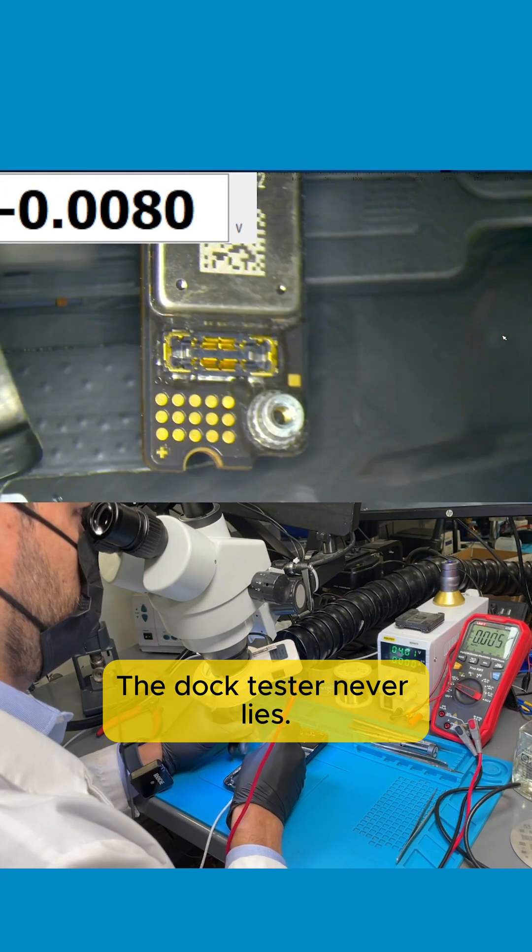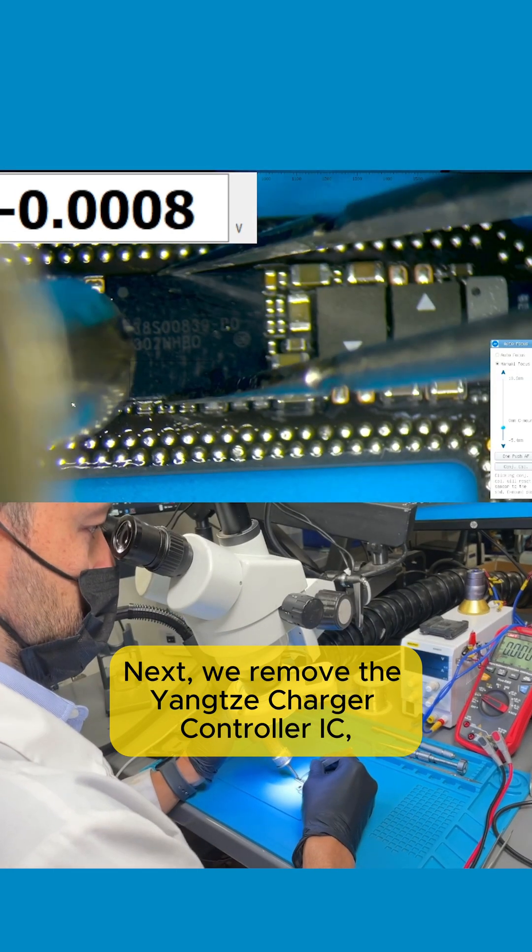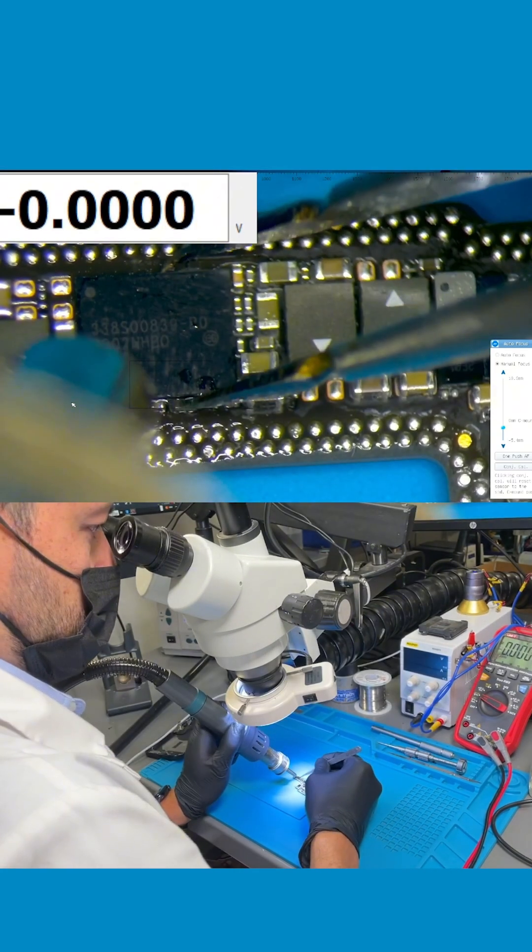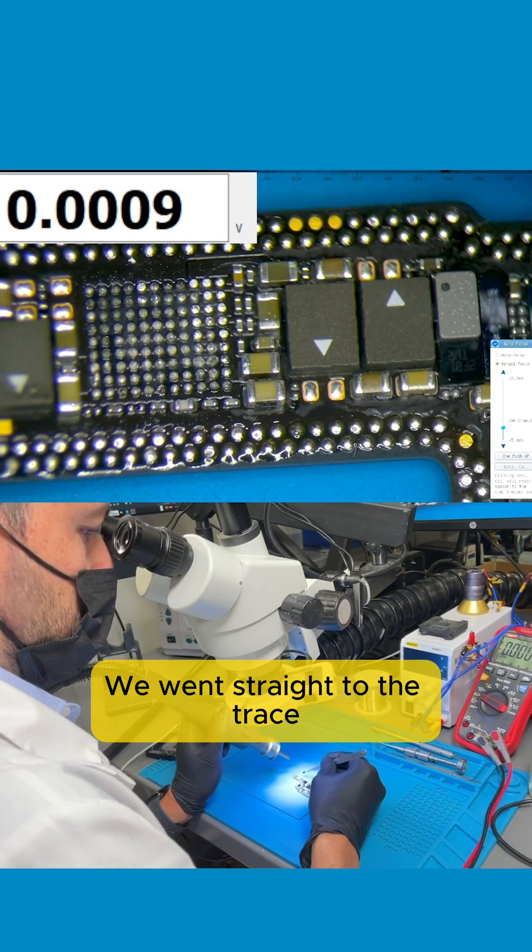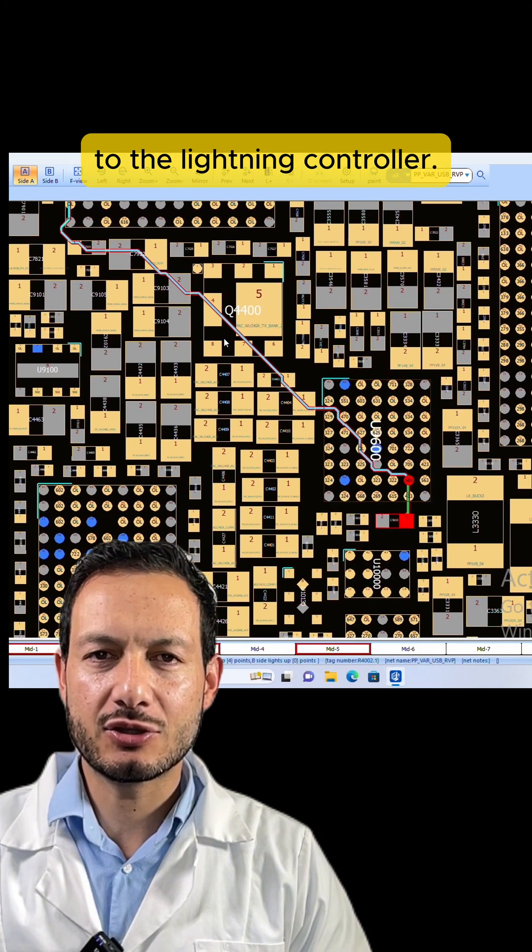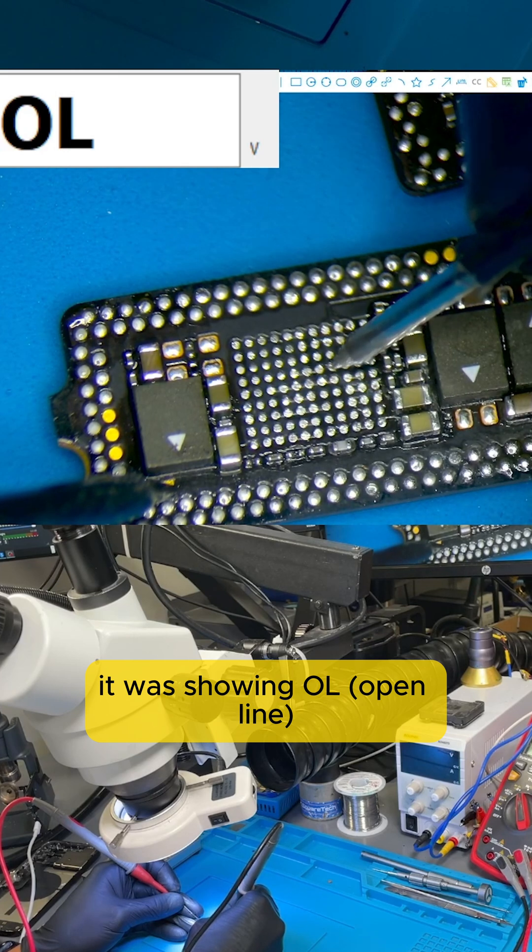The dock tester never lies. Next, we removed the Yangtze charger controller IC, which is responsible for charging the battery. We went straight to the trace responsible for providing 5 volts to the lightning controller. When we checked its value, it was showing OL, open line, instead of the 0.451 that the software indicated it should be.